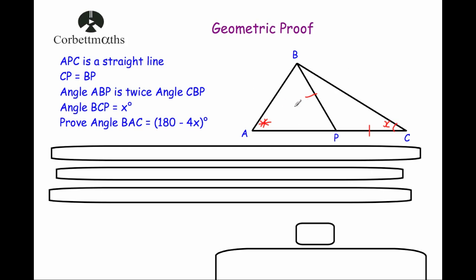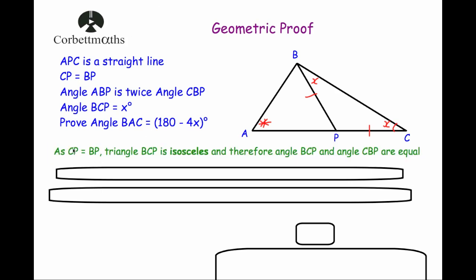So let's look at this question and each time we do something we'll write it down. The first thing I notice is that CP equals BP, so that means this is an isosceles triangle. And if this is an isosceles triangle, and this angle is equal to x, then angle CBP is also equal to x as well. So as CP equals BP, triangle BCP is isosceles, and therefore angle BCP and angle CBP are equal to each other.